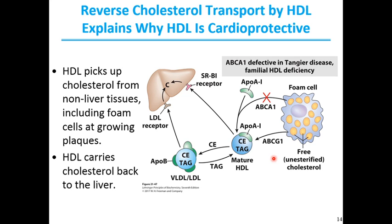In familial HDL deficiency, HDL levels are very low, and in Tangier disease, HDL is almost absent. Both genetic disorders result from mutations in the ABCA1 protein. APOA1 in cholesterol-depleted HDL cannot take up cholesterol from cells that lack the ABCA1 protein, and APOA1 and cholesterol-poor HDL are rapidly removed from the blood and destroyed.